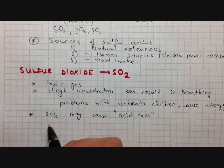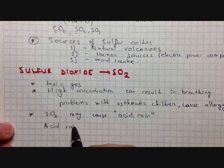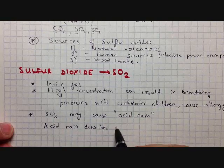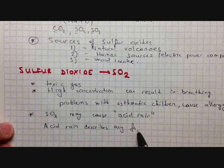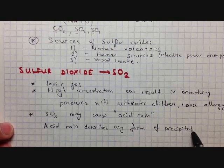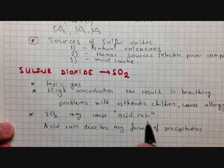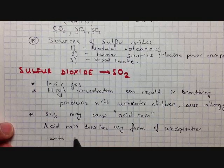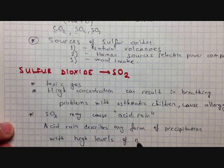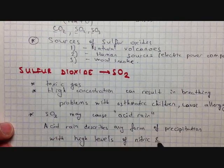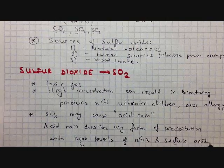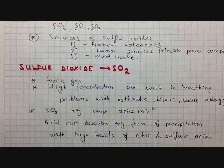Acid rain describes any form of precipitation with high levels of nitric acid and sulfuric acid.